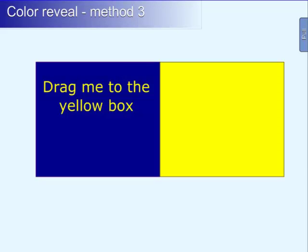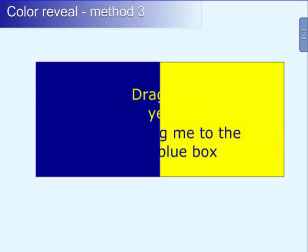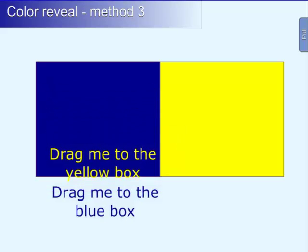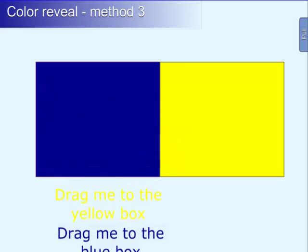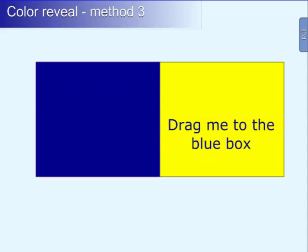Here's one more example of a color reveal method. I think it's pretty obvious how they did this one. They have two different text boxes that they've grouped together. The text is in two contrasting colors. One you can see over the dark colored box, the other you can see when you move it to the lighter colored box.